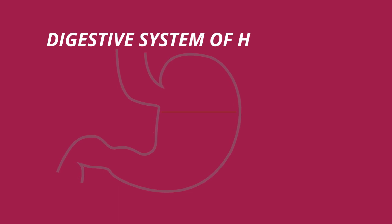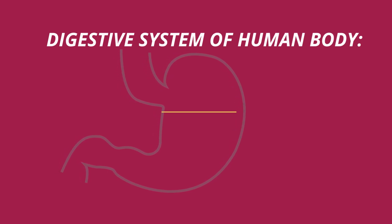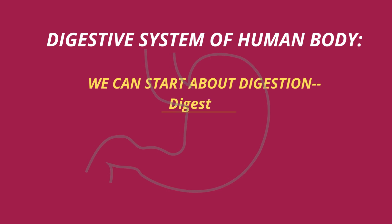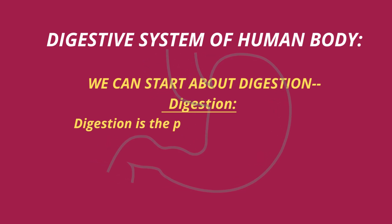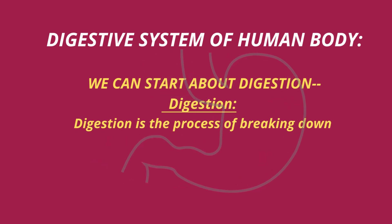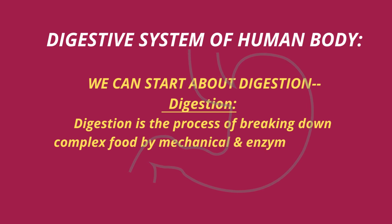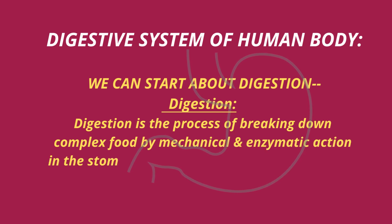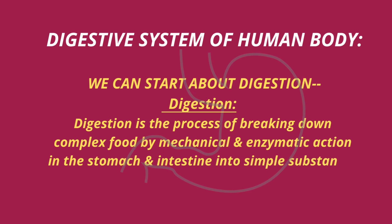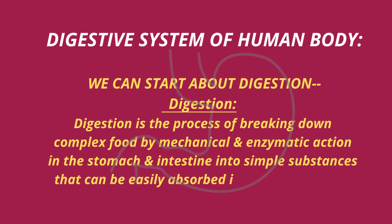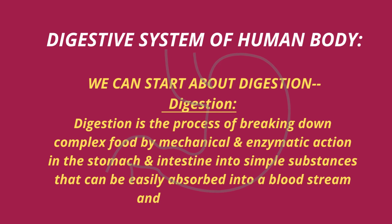Digestive System of Human Body. Digestion is the process of breaking down complex food by mechanical and enzymatic action in the stomach and intestine into simple substances that can be easily absorbed into the bloodstream and used by the body.